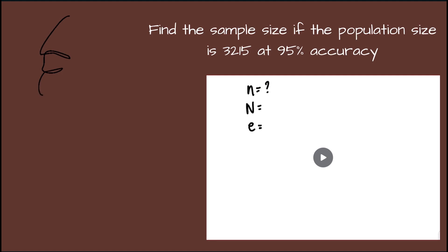Example: find the sample size if the population size is 3,215 at 95% accuracy. Small n refers to the sample size, capital N the population size, which is based on the given 3,215. The margin of error, we have 95% accuracy or 5% margin of error, or 0.05.